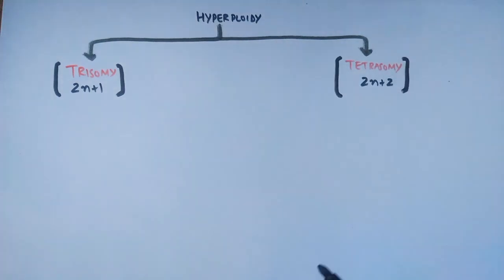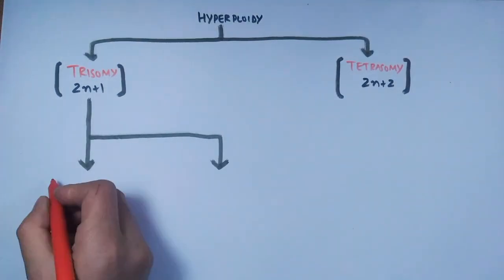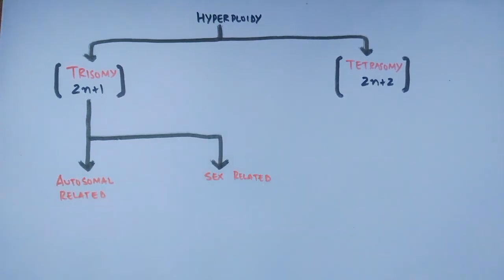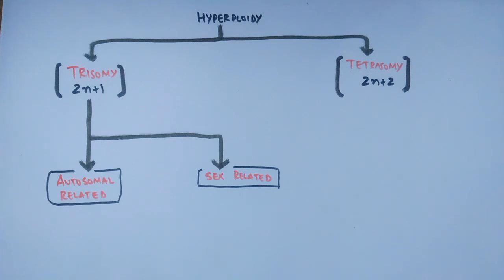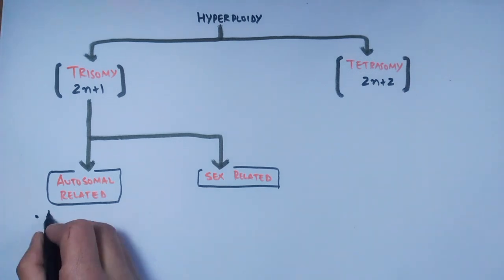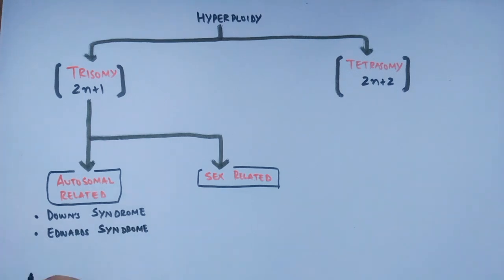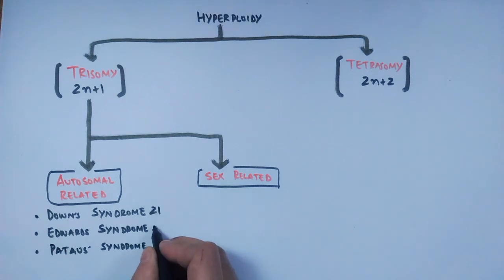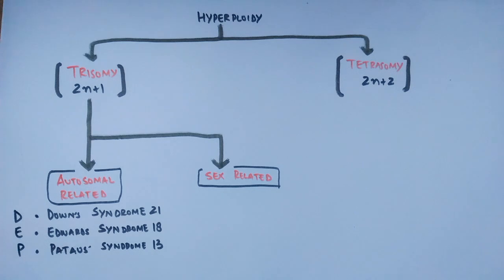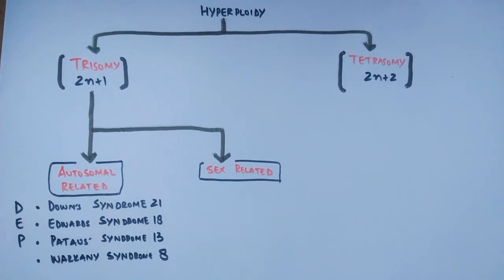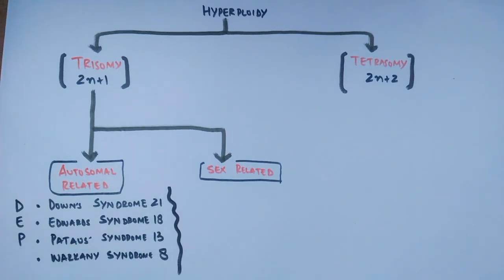In trisomy, there are three copies of a chromosome instead of two. Trisomy is further classified into autosomal-related trisomy and sex-related trisomy. In autosomal trisomy, three important conditions found in humans are Down syndrome (trisomy 21), Edwards syndrome (trisomy 18), and Patau syndrome (trisomy 13). Another trisomy is Warkany syndrome, which is trisomy of the 8th chromosome, though it is less familiar than the other three.